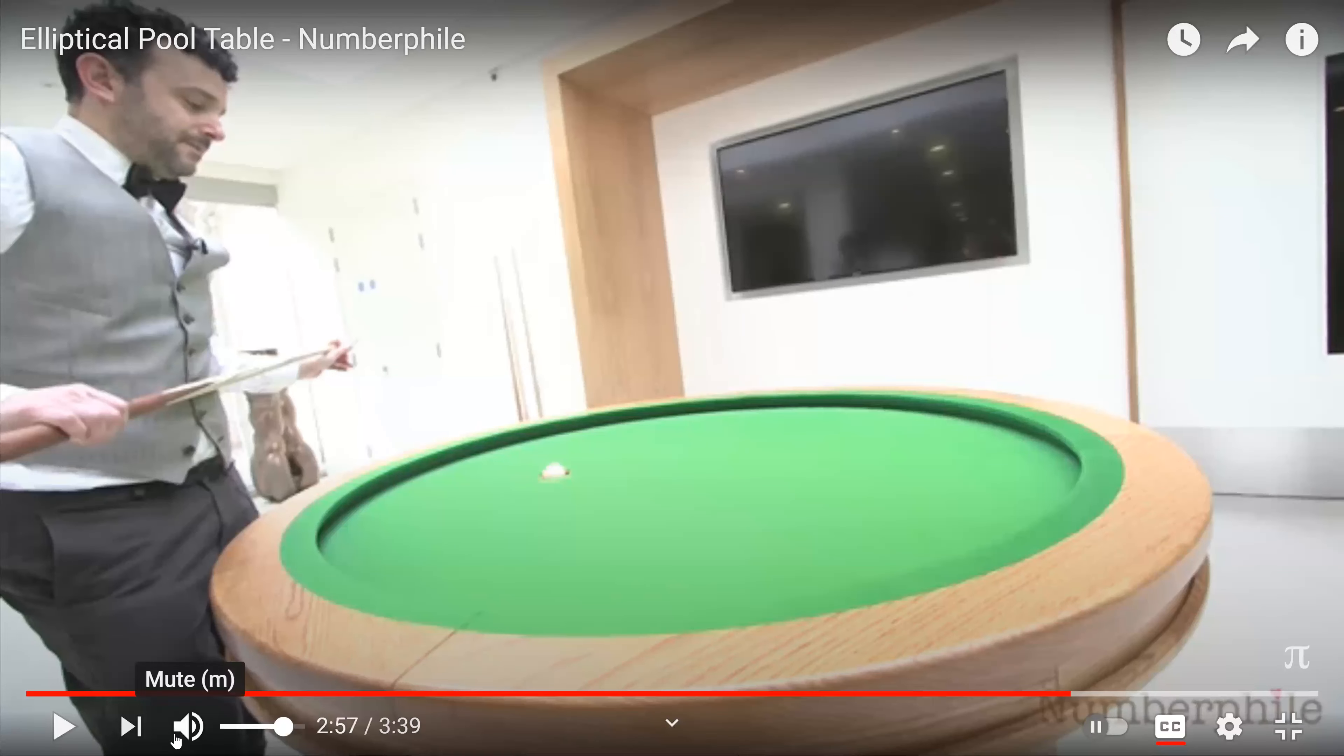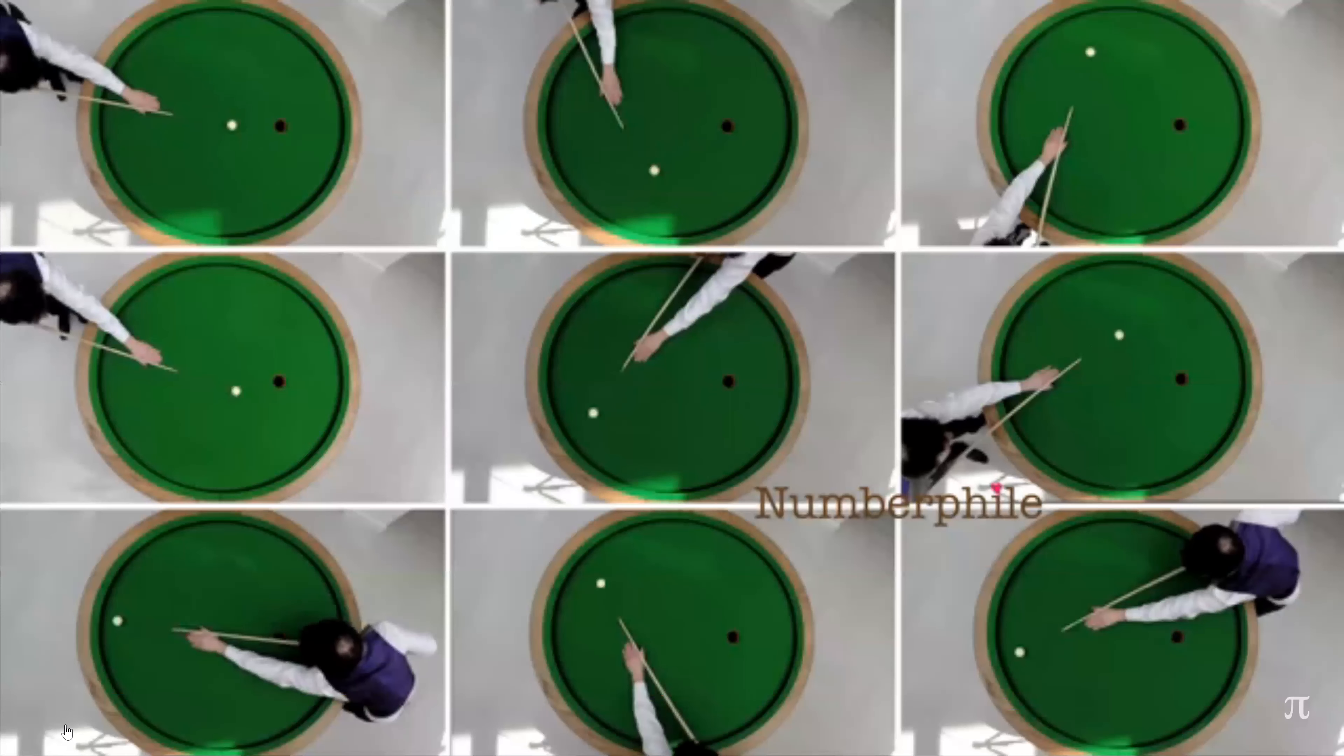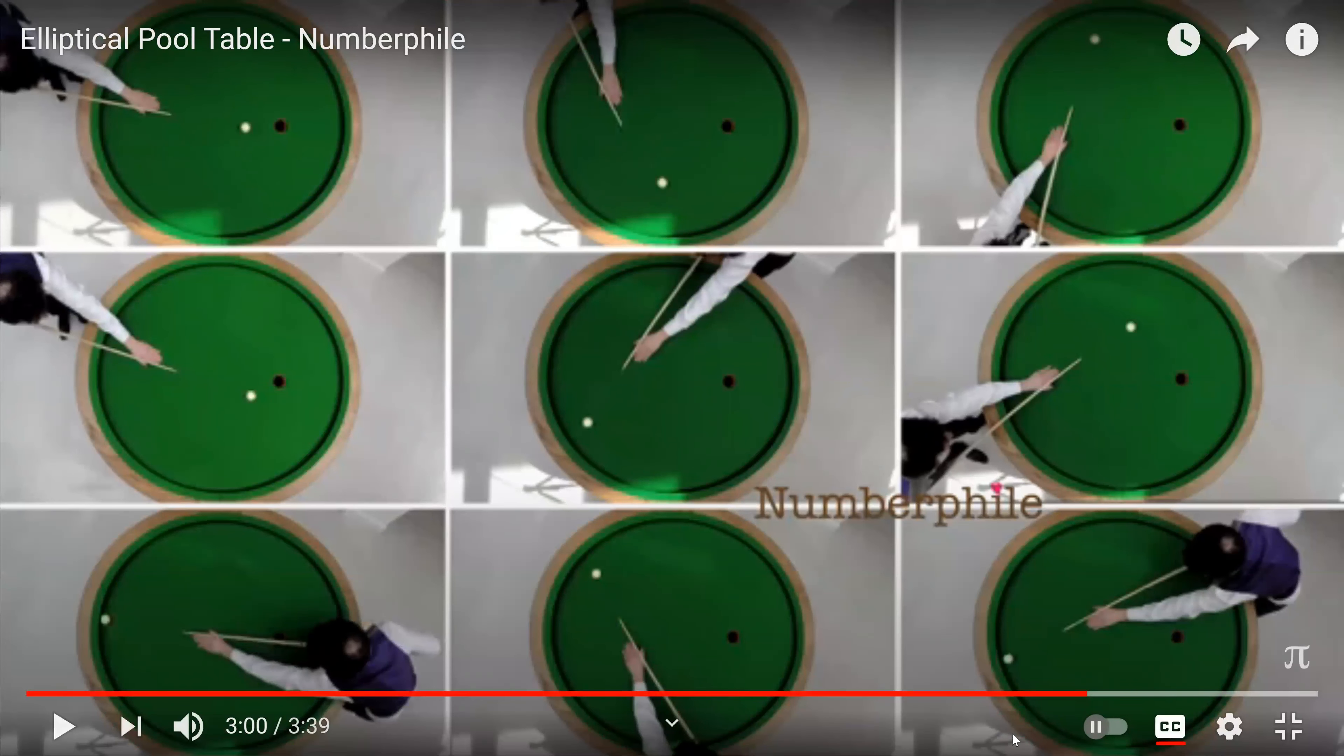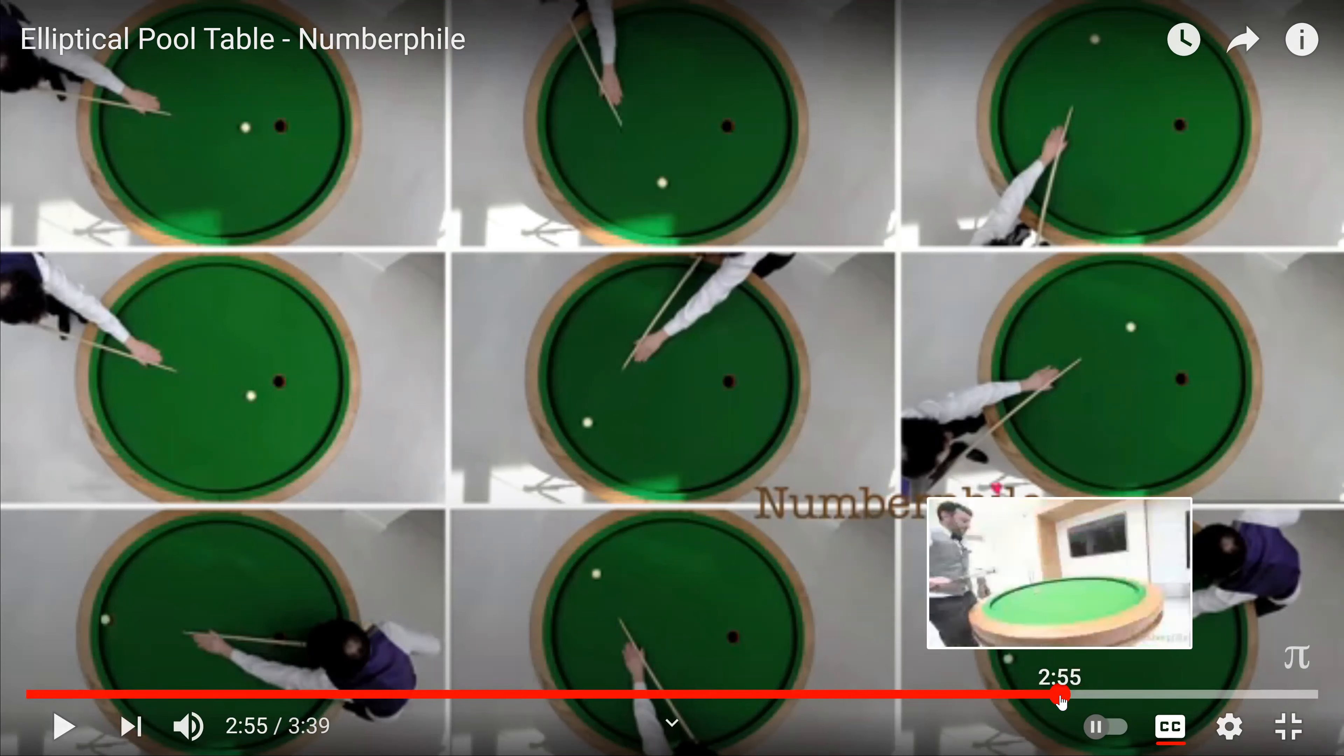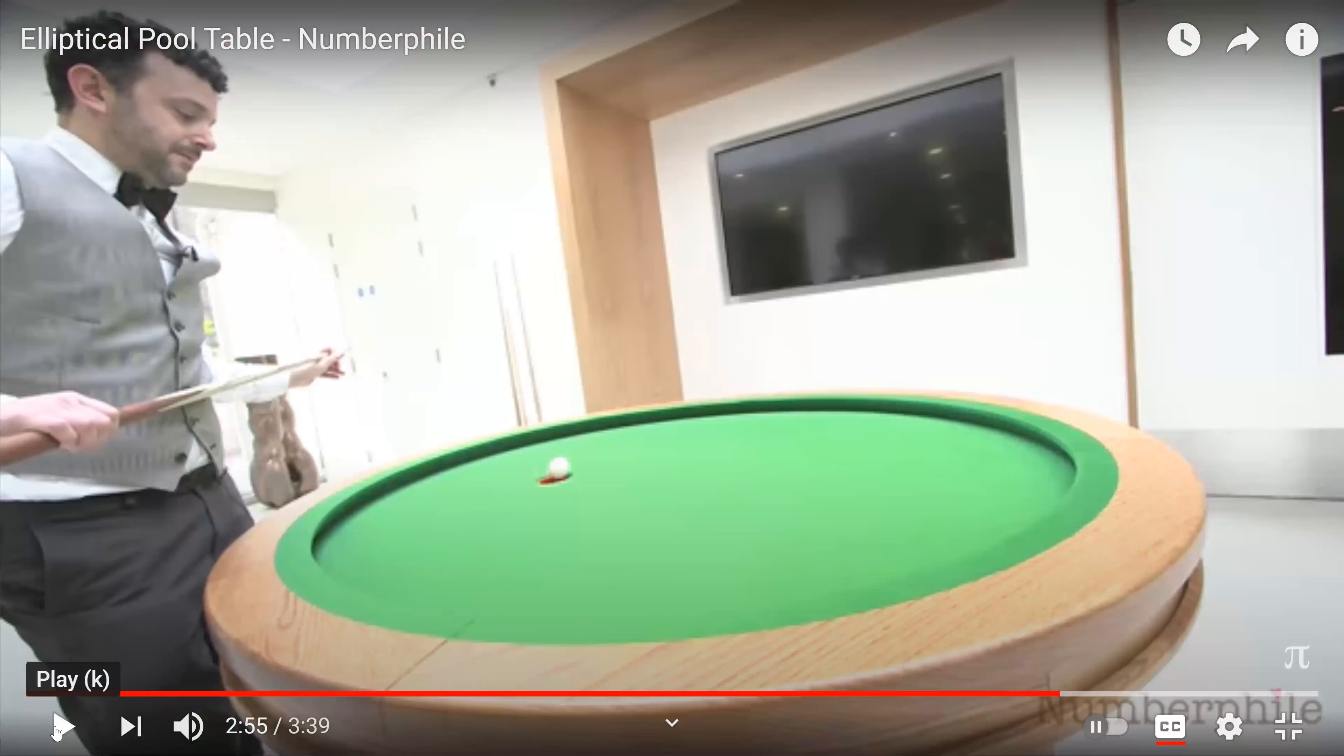And if you put the cue ball on one focus and at the other focus is the hole, let's see if you can make a shot from pretty much anywhere. And so here he goes. You put the pool ball at one focus and he's gonna shoot it just anywhere at random. And it should always go in. It's kind of cool.